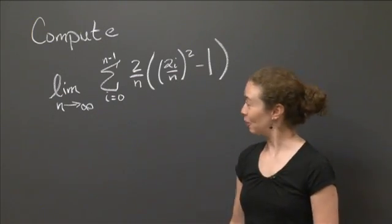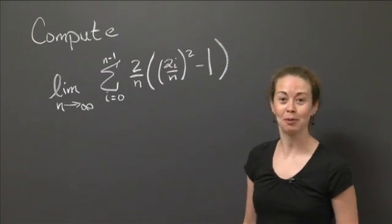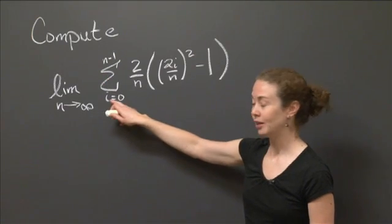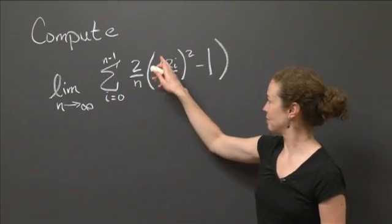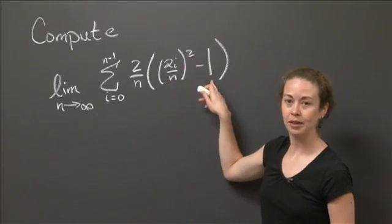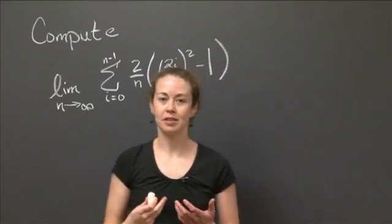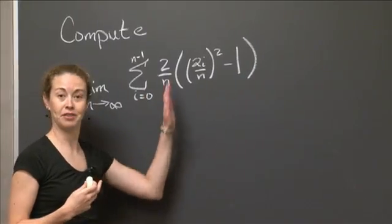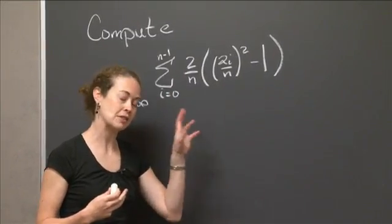Welcome back. Well, hopefully it's been fun for you to look at this problem so far. Let me just remind you what we were doing. We were trying to compute a limit, as n goes to infinity, of the sum from i equals 0 to n minus 1 of 2 over n times (2i over n) squared minus 1. So I gave you the big hint that this is probably going to be written as an integral.